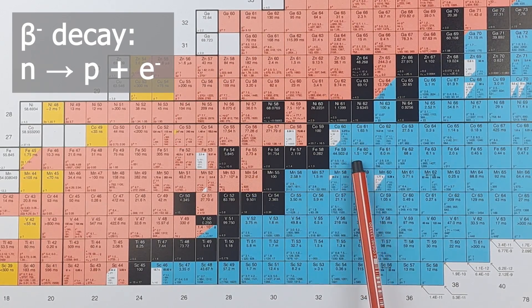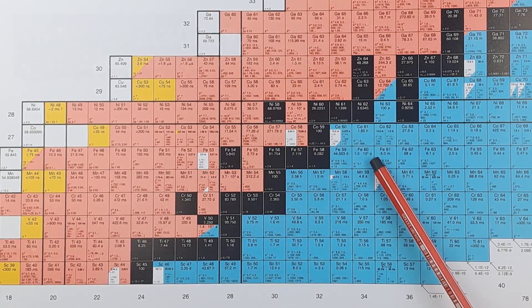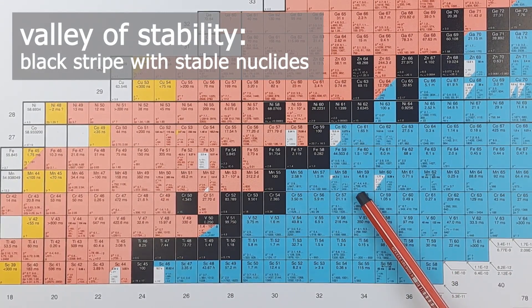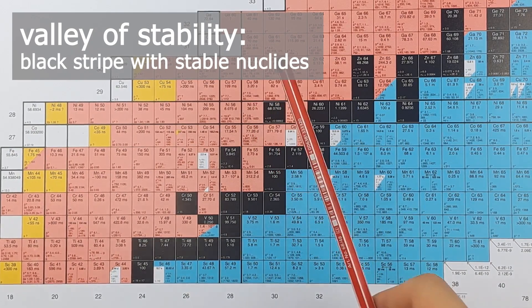Do we see a trend? They will all decay towards this black line. Once again, the beta decays all decay towards this black line. This is why this black stripe is also sometimes called the valley of beta stability.